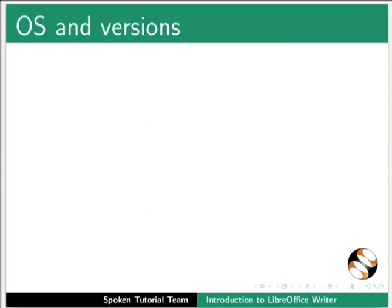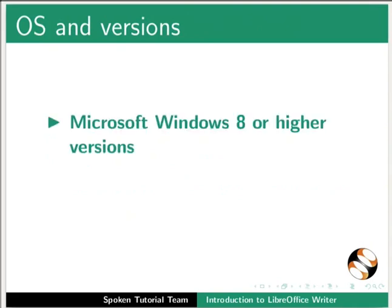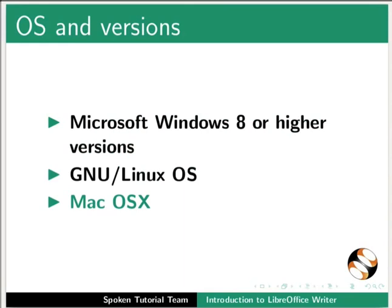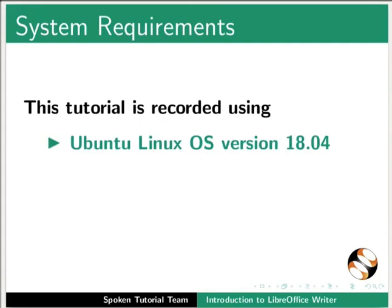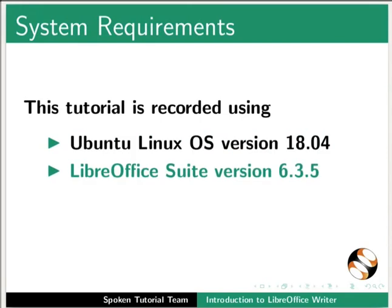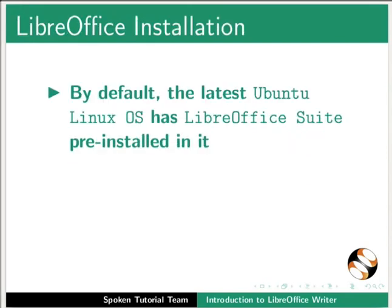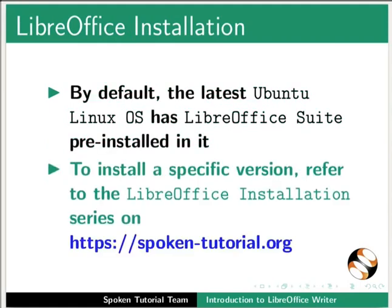LibreOffice Writer can run on any of the following operating systems: Microsoft Windows 8 or higher versions, GNU Linux OS, and Mac OS X. This tutorial is recorded using Ubuntu Linux OS version 18.04 and LibreOffice Suite version 6.3.5. By default, the latest Ubuntu Linux OS has LibreOffice Suite pre-installed. To install a specific version, refer to the LibreOffice installation series on this website.